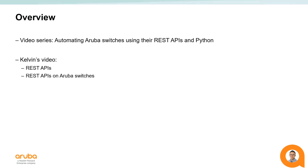In that video, Kelvin explained how HTTP methods are used to invoke REST APIs. Sending one HTTP request at a time is very useful to test out the Aruba REST APIs. However, it becomes inefficient to send one request at a time when you need to chain multiple operations together. This video will provide an overview of the plus points of using Python — one particular programming language used to automate REST API interactions. If you haven't watched Kelvin's video, I recommend checking that one out first.